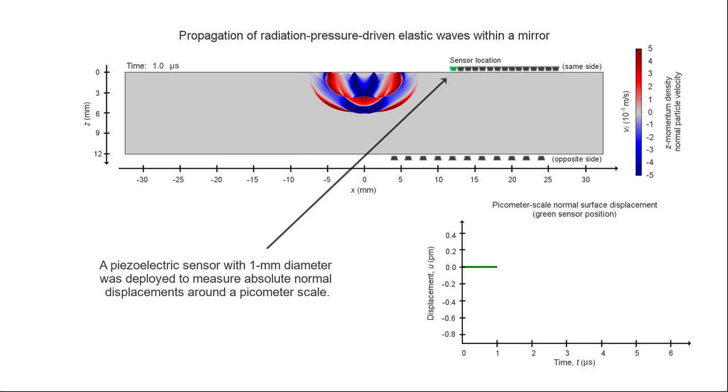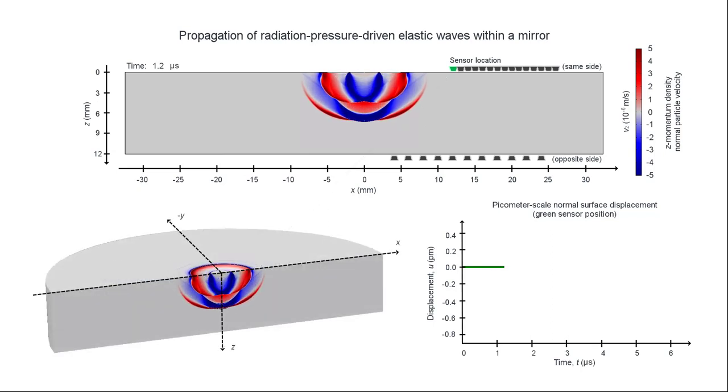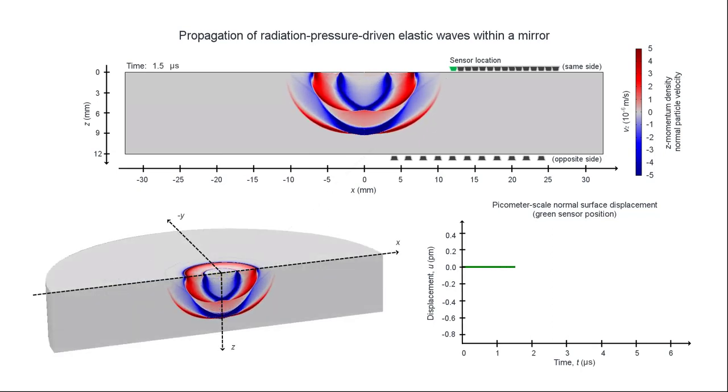Shown below is a plot of the normal displacement versus time at the sensor location highlighted in green. The features of the displacement waveform can be correlated to the arrival of different wave types at the sensor location.